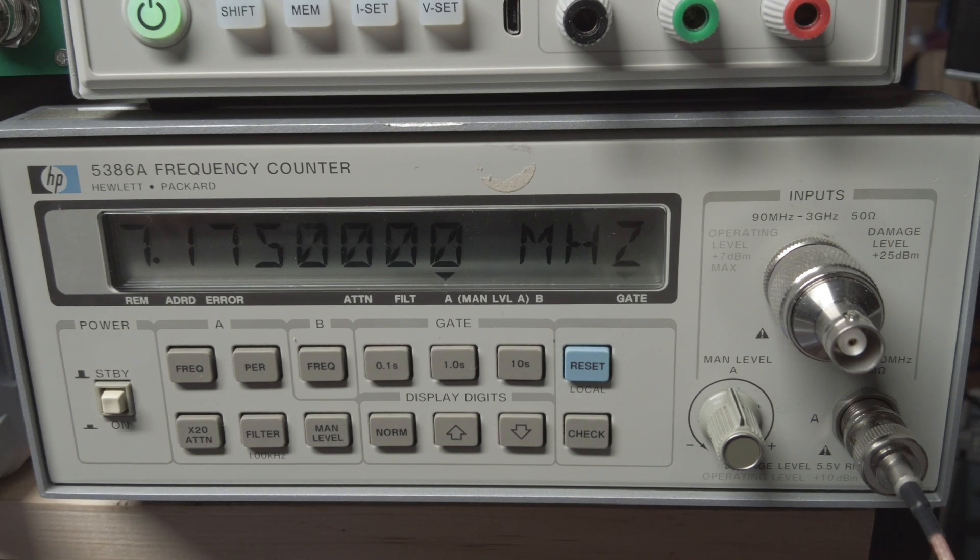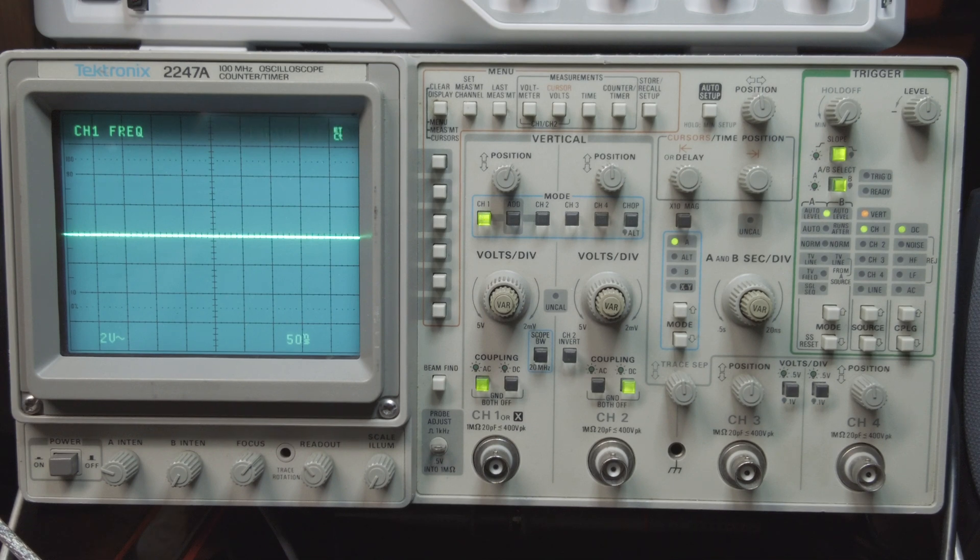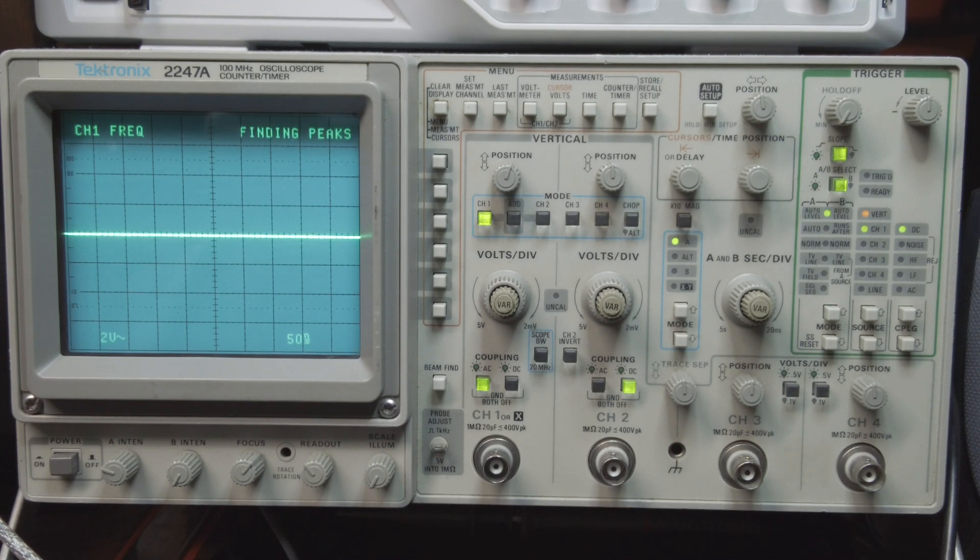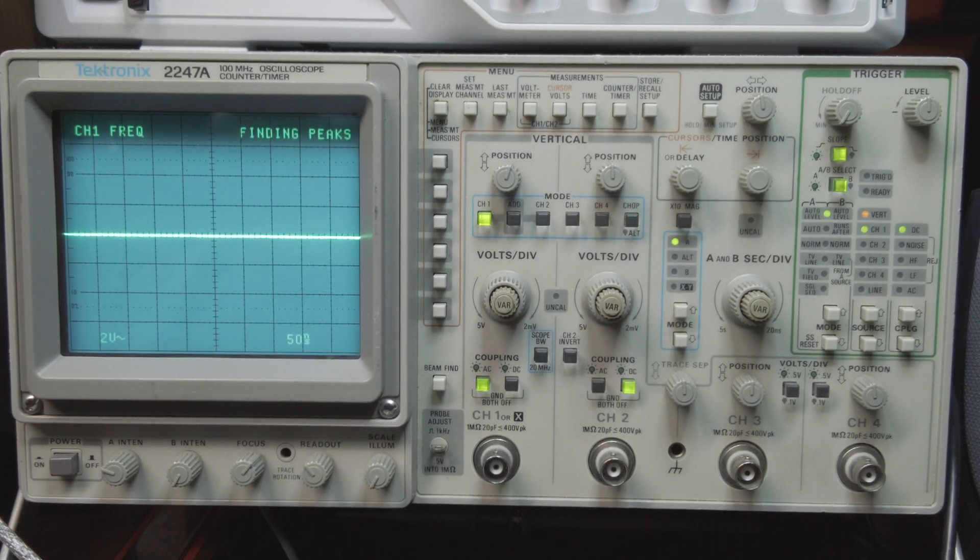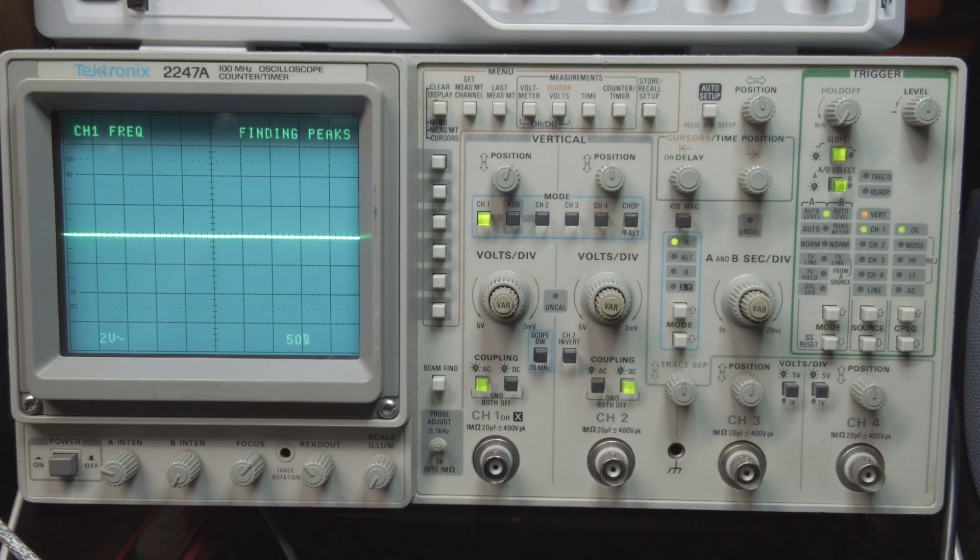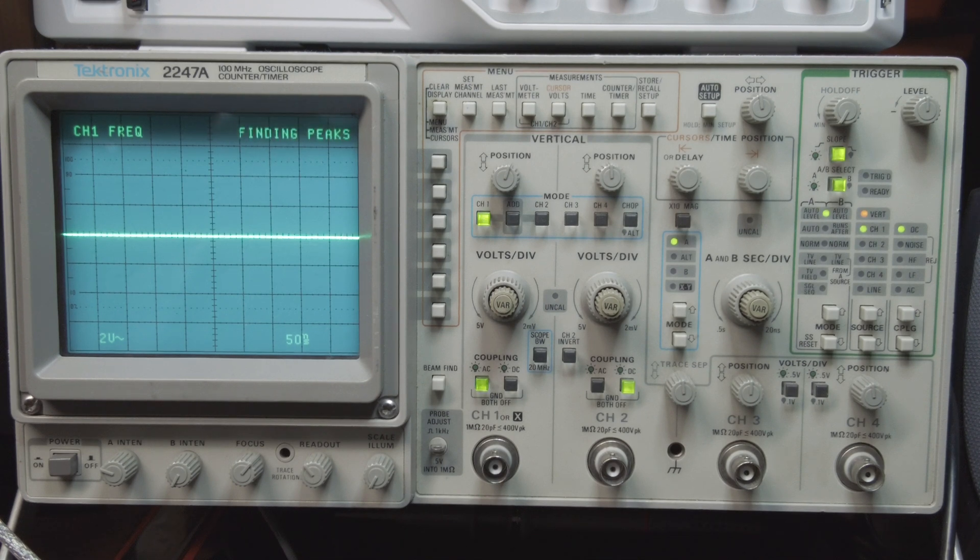But what does that signal look like? Well, let's take it over to our third stop of the day, the oscilloscope. This is the Tektronix 2247A oscilloscope. An oscilloscope lets you visualize a change in voltage over a change in time, which is perfect for us because an RF signal is a change in voltage over a change in time. In fact, this signal is changing 7.175.000 times every second. The screen here shows you the voltage on the vertical axis and time on the horizontal axis. Now let's connect our signal to the input of the scope and see what we get.